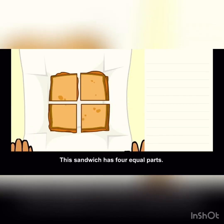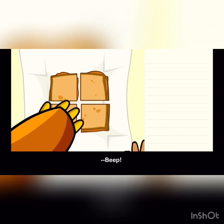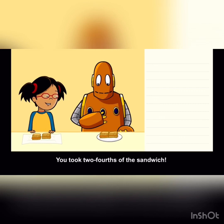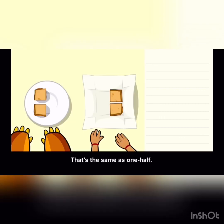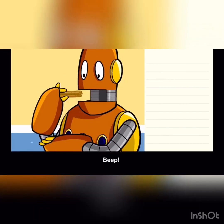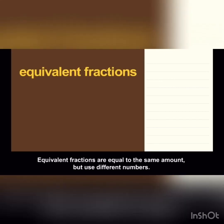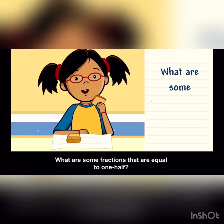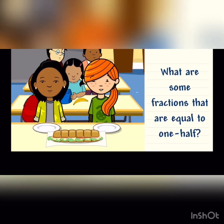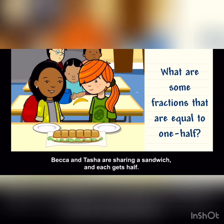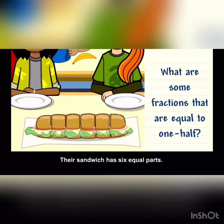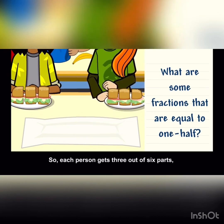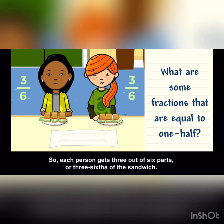This sandwich has four equal parts. You took two fourths of the sandwich — that's the same as one half. Equivalent fractions are equal to the same amount but use different numbers. What are some fractions that are equal to one half? Becca and Tasha are sharing a sandwich and each gets half. Their sandwich has six equal parts, so each person gets three out of six parts, or three sixths of the sandwich.